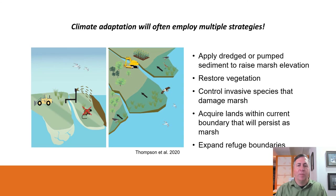Climate adaptation will often employ multiple types of strategies. At Blackwater National Wildlife Refuge, dredged silt and sand were used to build up an area of marsh that was disappearing from sea level rise. Marsh grasses were planted and invasive nutria removed. The refuge is also acquiring forest and farmland at adjacent higher elevations, where the marsh can migrate over time and continue to provide marsh bird habitat and other benefits. There's often overlap between adaptation and mitigation — for example, saving and restoring coastal marsh also sequesters carbon in the form of peat.